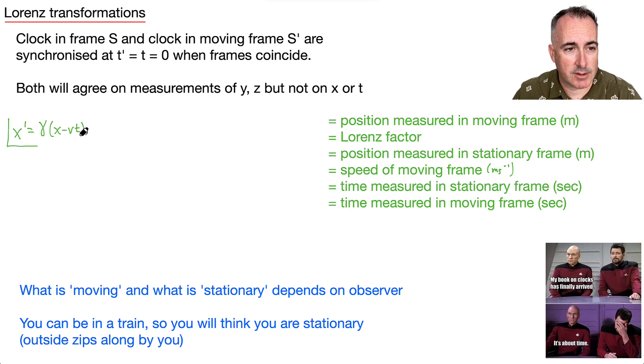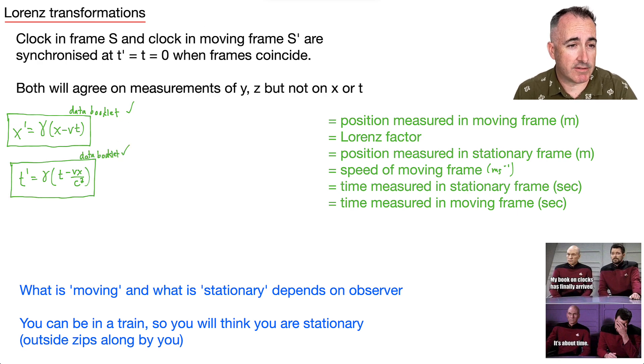It goes X primed equals gamma times X minus VT. And this is in your data booklet. You don't have to memorize. So the next one's about time and it goes like this. So it's still got a gamma right here, but this time it goes T minus VX over C squared. Okay, so let's look at all your different variables here going on. It gets a little bit complicated, but remember, primes mean moving frames.